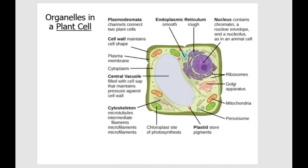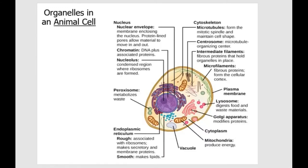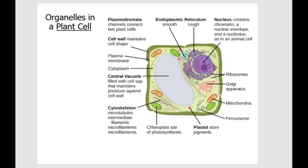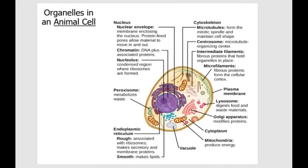The next two slides give an overview of all the cell organelles in an animal cell and a plant cell. One major difference is that plant cells have a rigid edge because they have a rigid cell wall. But when you look at animal cells, the shape is really kind of irregular — there's no rigid structure. Animal cells do not have a cell wall. That's one of the major differences you have to remember.